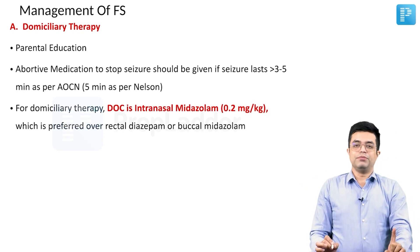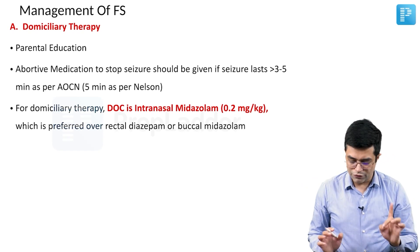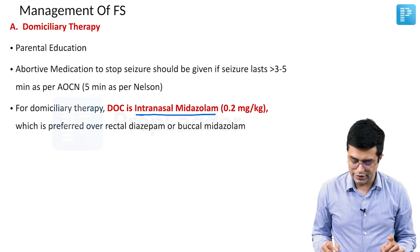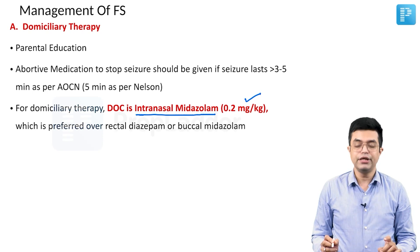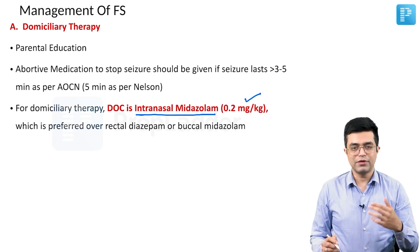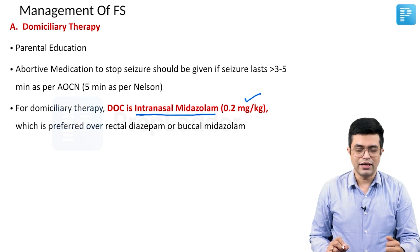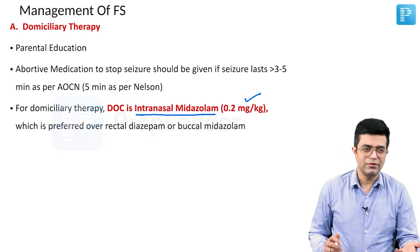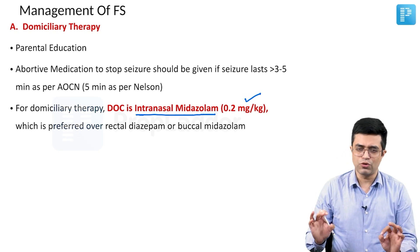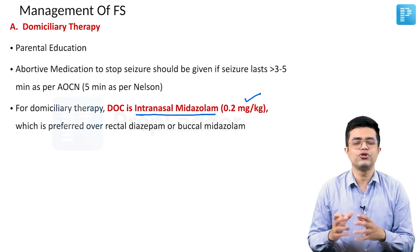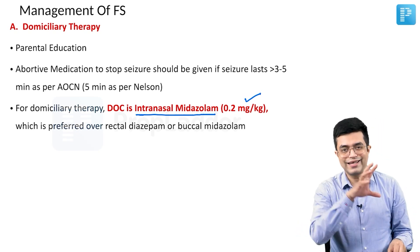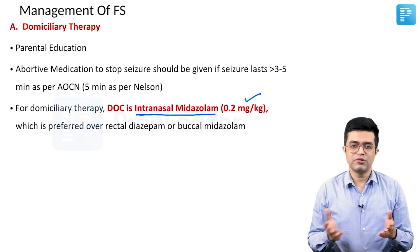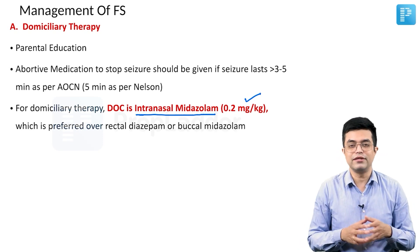For domiciliary therapy, the drug of choice is intranasal midazolam at a dose of 0.2 mg per kg. Midazolam comes as nasal sprays — by the names INSED nasal spray and Midasip nasal spray. They have pediatric and adult formulations. You should explain to the parents how midazolam is to be given.